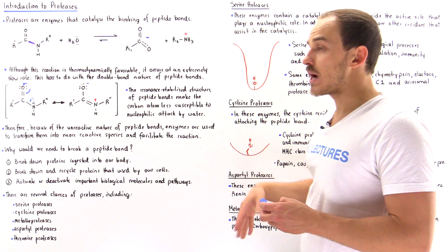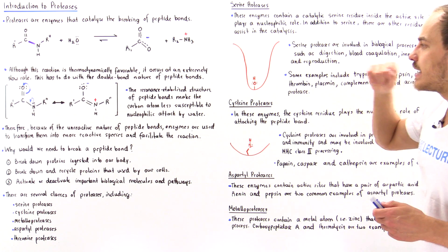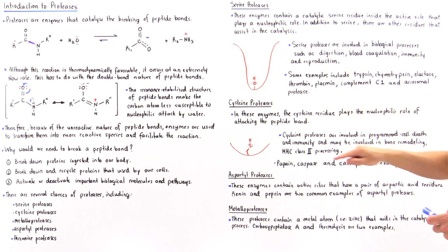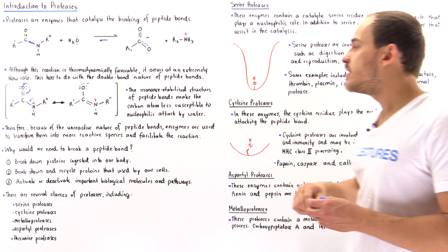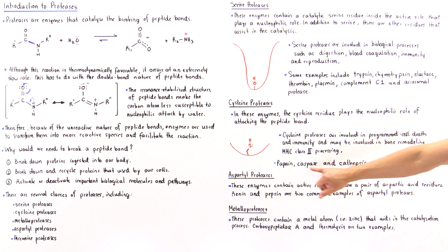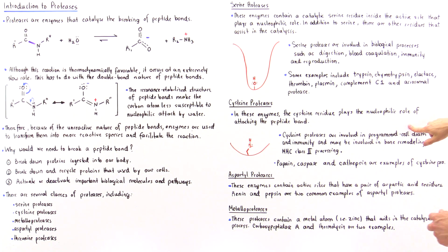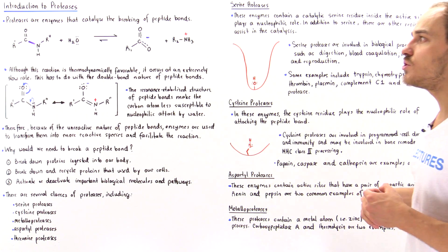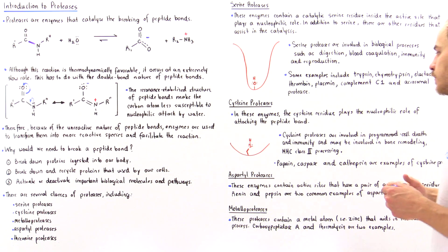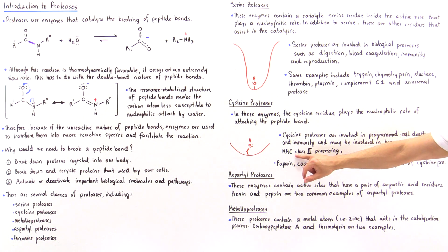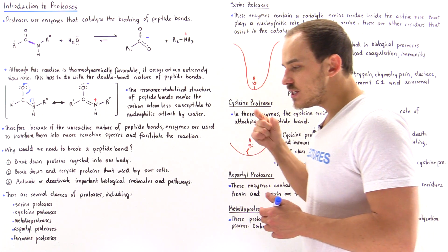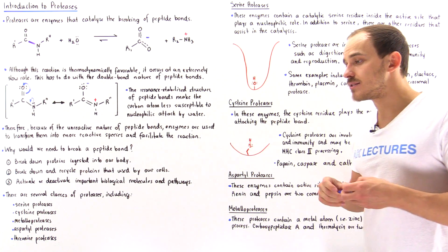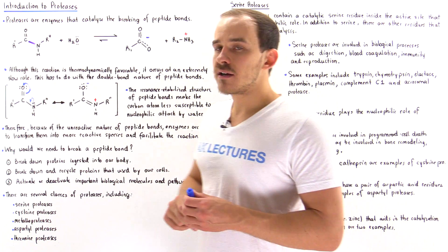We also have cysteine proteases, which contain a cysteine residue that plays the nucleophilic role of attacking that peptide bond and catalyzing the hydrolysis reaction. Cysteine proteases such as caspase and cathepsin are involved in programmed cell death, also known as apoptosis, which is an immune response and is also involved in normal embryological development. Other evidence suggests cysteine proteases are involved in bone remodeling as well as MHC class II processing — MHC standing for the major histocompatibility complex class II, a protein complex found on certain immune cells.